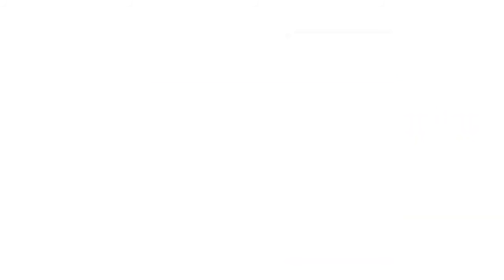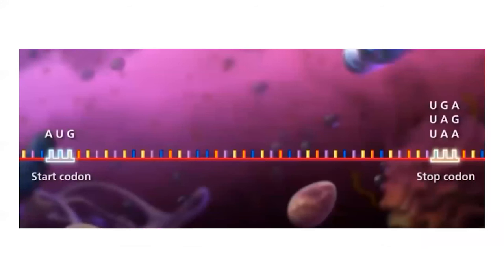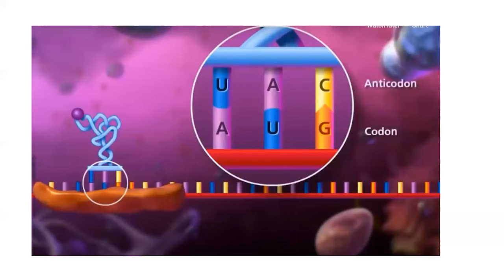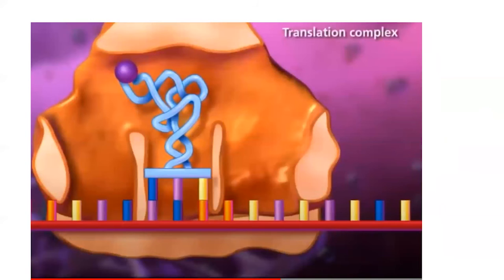The messenger RNA interacts with a specialized complex called a ribosome, which reads the sequence of messenger RNA bases. Each sequence of three bases is called a codon, which codes for an amino acid. Amino acids are the building blocks of proteins. The ribosome binds to the start codon. A type of RNA called transfer RNA also binds at this location with a complement of three nucleotides called an anticodon. The ribosome complex completes itself and is ready to assemble the protein, one amino acid at a time.